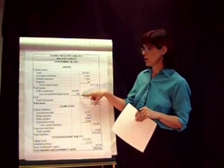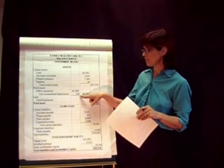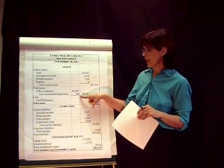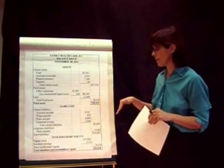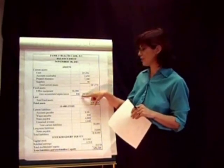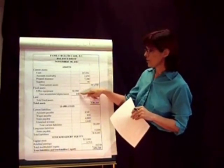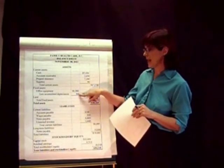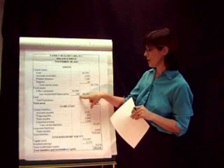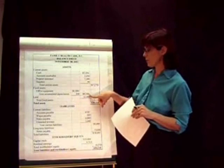Then we come down to the fixed assets section. Accumulated depreciation, which we talked about in the last video, comes about as we record depreciation at the end of each period — it accumulates and builds up over time. Someone once called it 'accumulated depression,' which I thought was funny because we can understand how those things accumulate too. Accumulated depreciation is always listed next to the asset it goes with — in this case, office equipment — and we use the word 'less accumulated depreciation' because we're subtracting it.